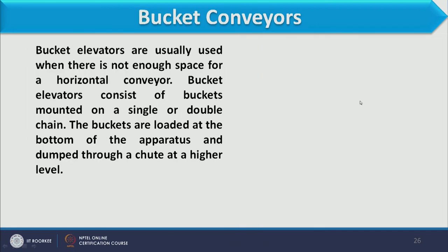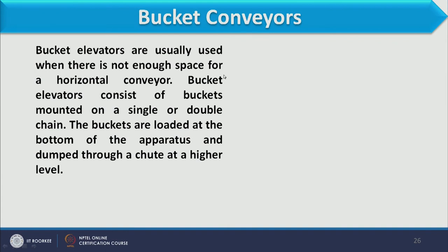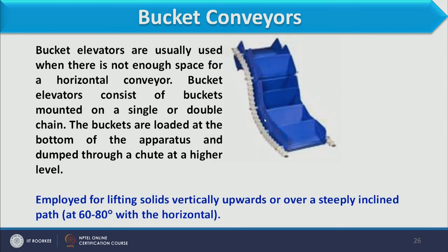Next, we discuss the bucket conveyor. A bucket conveyor is shaped like a bucket and takes material and dumps it to the other side. These are specifically used when material needs to be moved from one floor to another, or transferred vertically. Bucket elevators are used when there is not enough space for a horizontal conveyor, and consist of buckets mounted on a single or double chain.